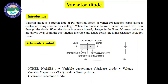What is a varactor diode? The term varactor diode is originated from a variable capacitor. The varactor diode operates only in reverse bias. It acts like a variable capacitor under reverse bias. The varactor diode is also sometimes referred to as a varicap diode, tuning diode, variable reactance diode, or variable capacitance diode. They are manufactured to show better transition capacitance properties than ordinary diodes.